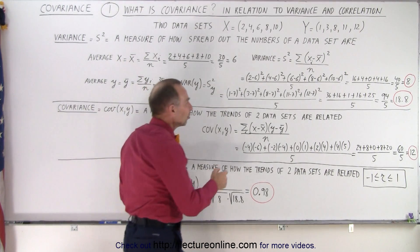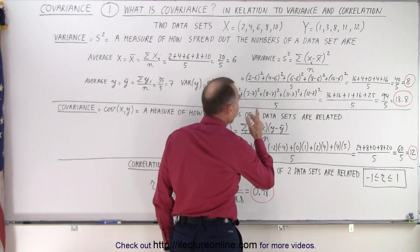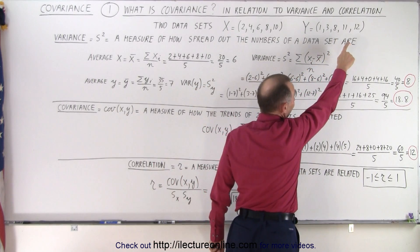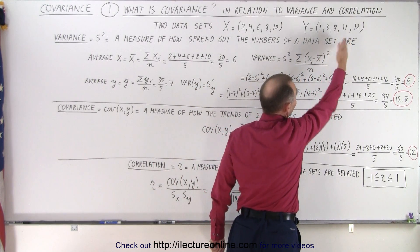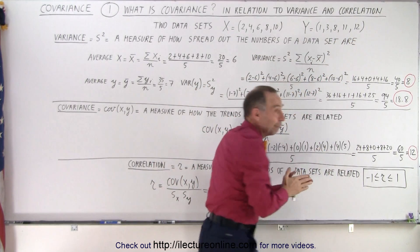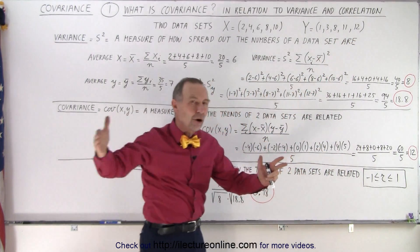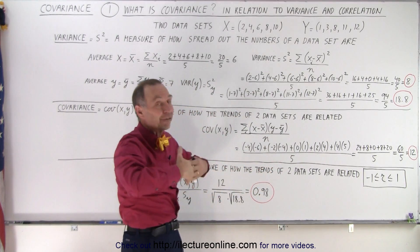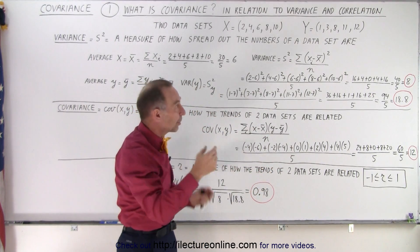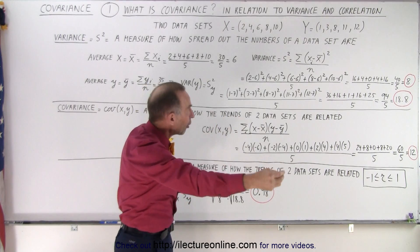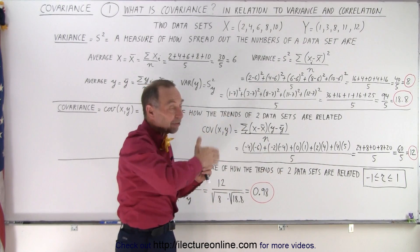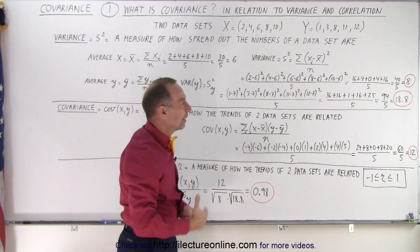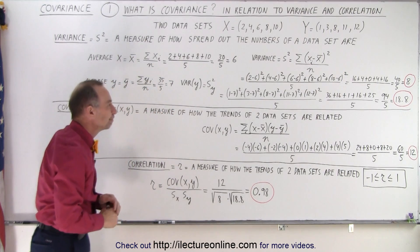Notice that if there's a single number very far away from the average — for example, if instead of 12 it was 50 — that number would be very far from the average. When you square that difference, you get a very large variance. So a single outlier that is far away from the average can really inflate the variance when you calculate it.